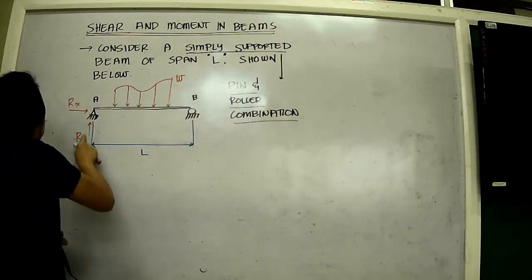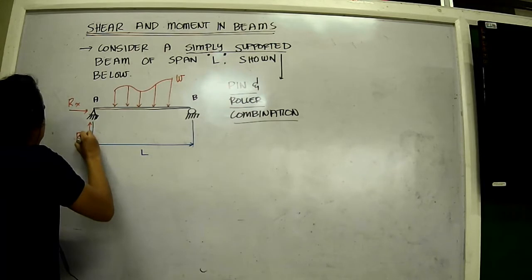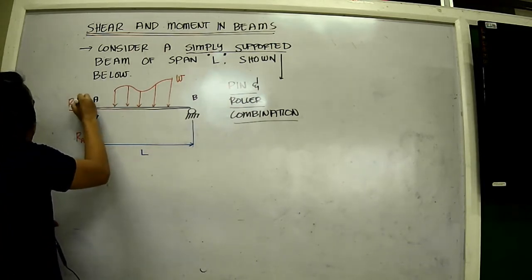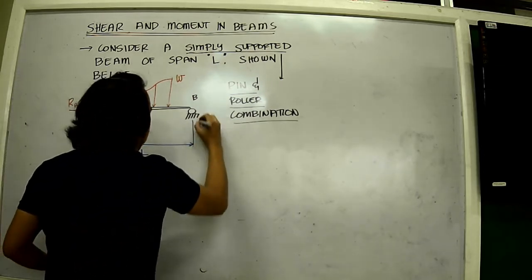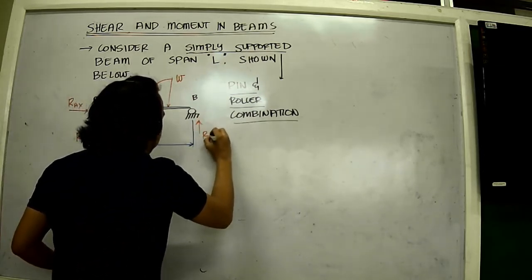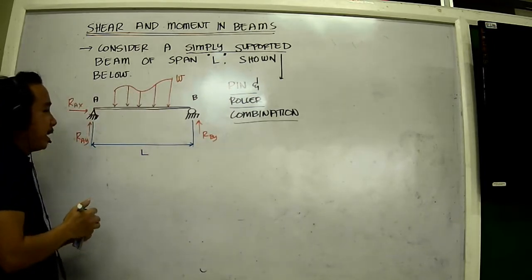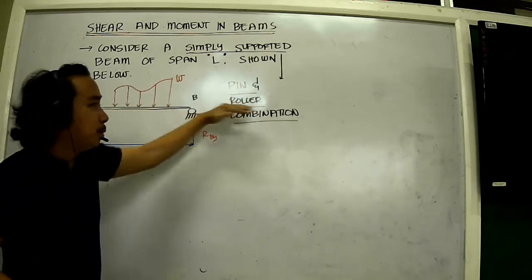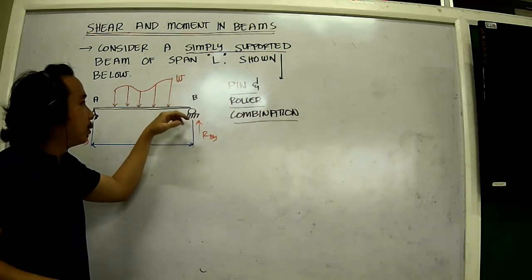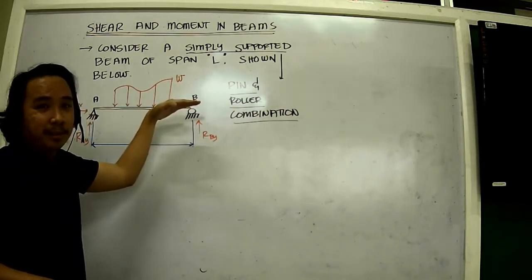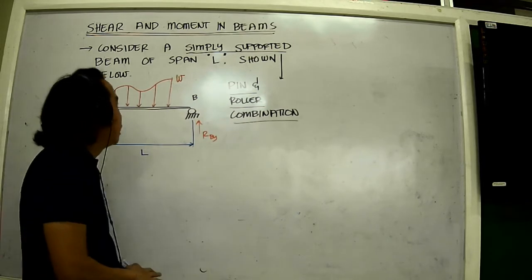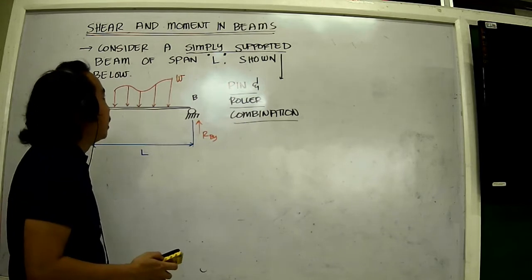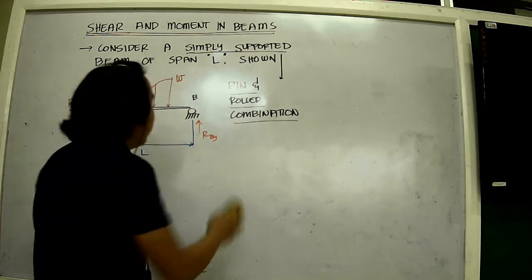Now when you say you cannot move vertically, there must be corresponding reactions. For convenience, I would like to label this as point A and this is point B. So this is RAX and RAY rather. This is RBY. It has no x component. This roller is free to move this way but it is not free to go downward. Now that is the concept of pin and roller combination. That is what is meant to be simply supported, this beam.